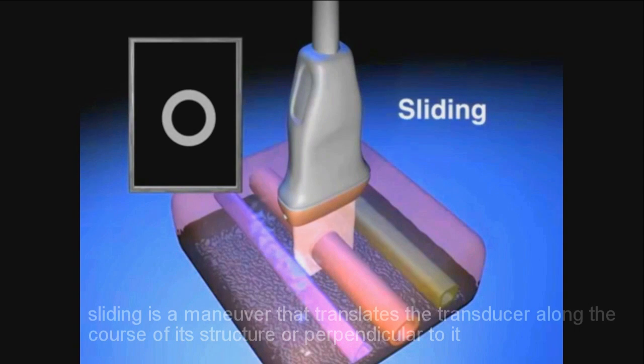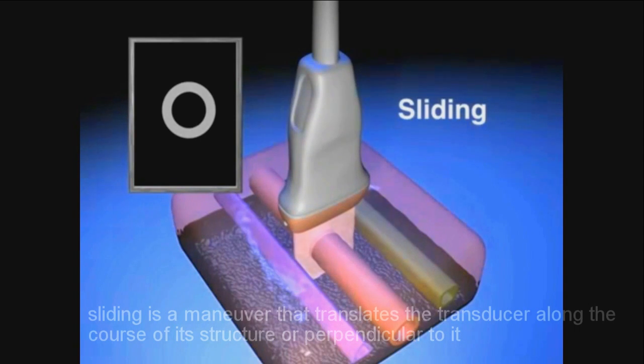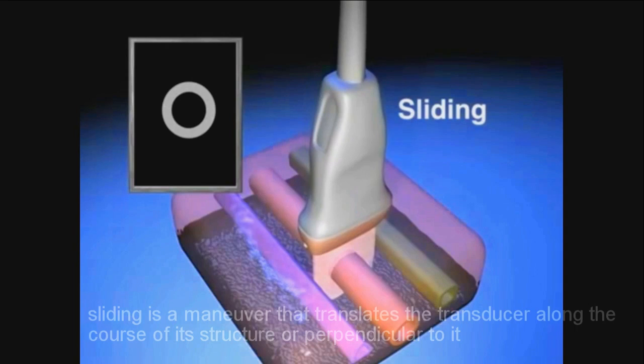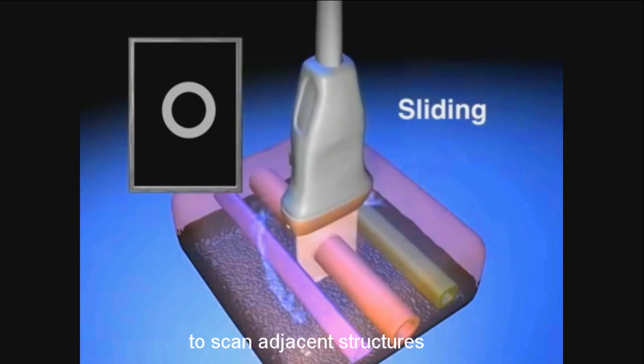Sliding is a maneuver that translates the transducer along the course of a structure or perpendicular to it to scan adjacent structures.